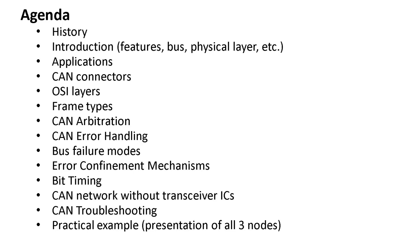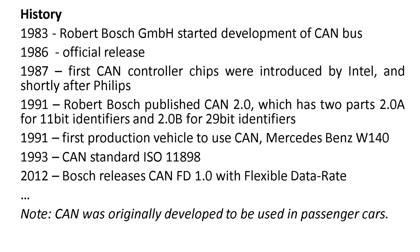Let's start with the history. In 1983, Robert Bosch started the development of the CAN bus, and the official release was in 1986. In 1987, the first controller chips were introduced by Intel, and shortly after, Philips produced CAN controllers as well. In 1991, CAN 2.0a and CAN 2.0b were published, and also in that year, the first production vehicle to use CAN was the Mercedes-Benz.